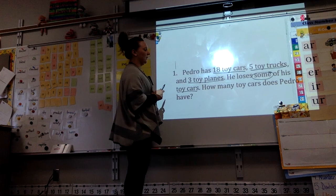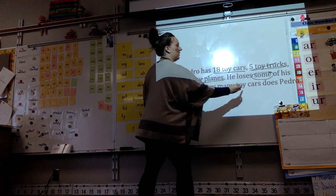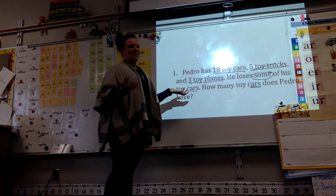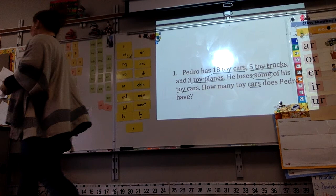I'm looking at this and I see that he started with 18 toy cars and five toy trucks. I don't need to know that. Well, that shows me that there's already too much. And three toy planes. I don't need to know that either. I'm only looking for cars. And he loses some. Well, I don't really know how many some is. So there's not enough information here to figure out how many toy cars Pedro has. Because we don't know how many some is.